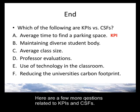B: Maintaining a diverse student body — that's a critical success factor. It is actually one of Cal Poly's strategic goals in the mission of the university, and you'd have measures to see whether you do that or not. Diversity is a big core value of the university. C: Average class size — KPI. That one's obvious; you can tell over time whether your average class size is going up or down. D: Professor evaluations — another KPI. These are things you measure every single class.